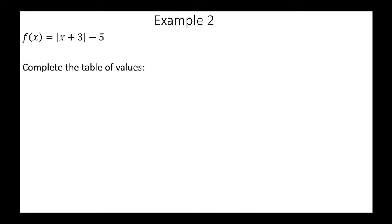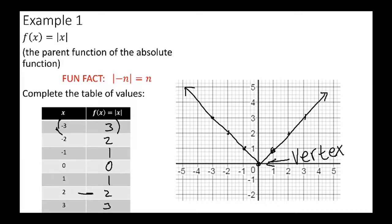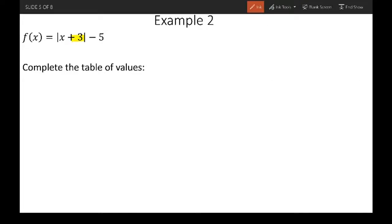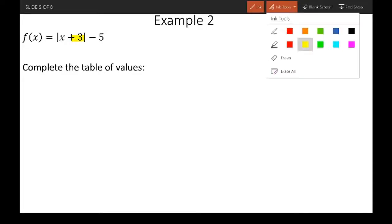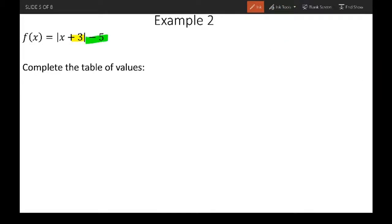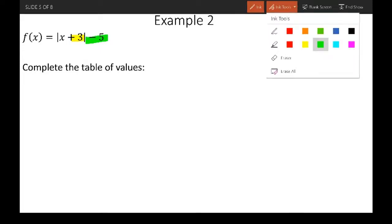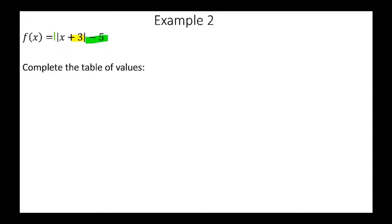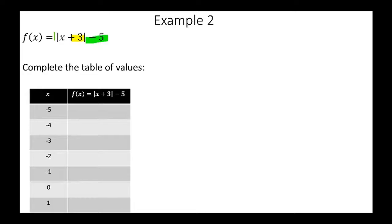In example two, just looking back at example one, the numbers changed. There's an absolute value of x, but then all of a sudden there's absolute value of x plus three and minus five. That's H, and then this negative five — minus five — is your K. So those are two parameters so far. Remember I mentioned a, h, and k — A is really just one here, so it's kind of like your parent almost. But the vertex is going to be different.